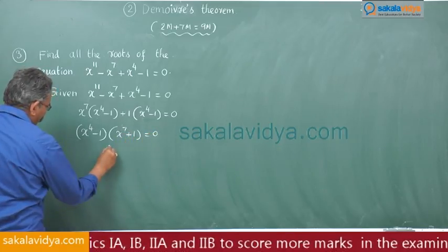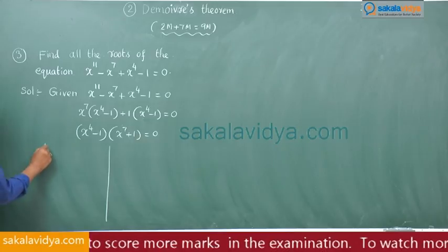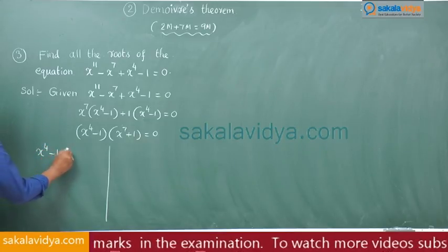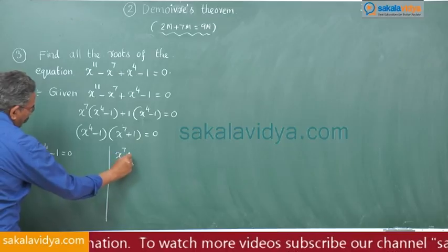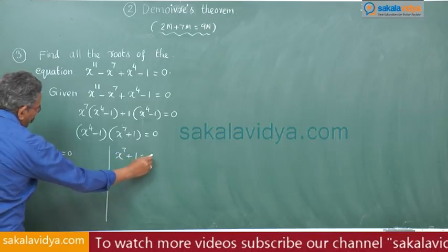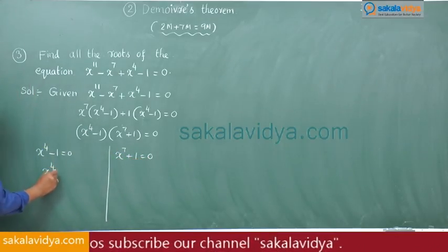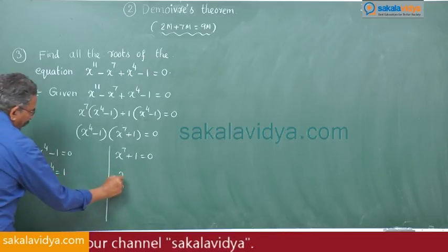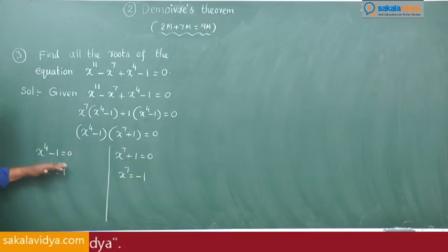So here we get two equations: x to the power of 4 minus 1 is equal to 0, and x to the power of 7 plus 1 is equal to 0. That means x to the power of 4 is equal to 1, and x to the power of 7 is equal to minus 1. We have to solve these two equations.